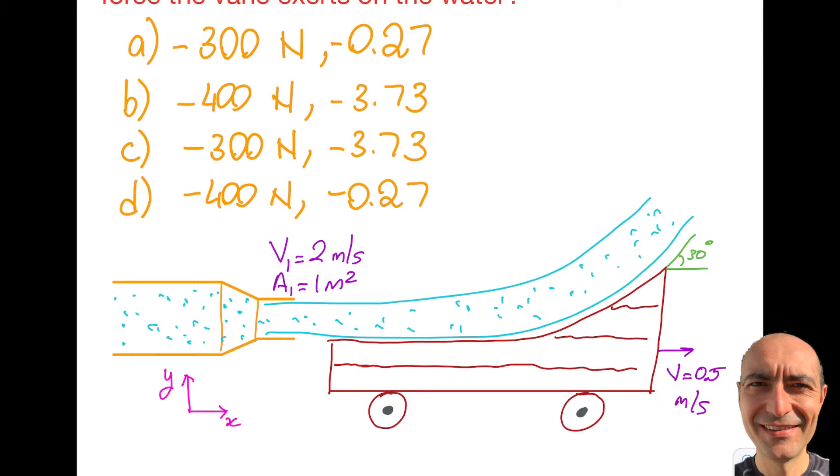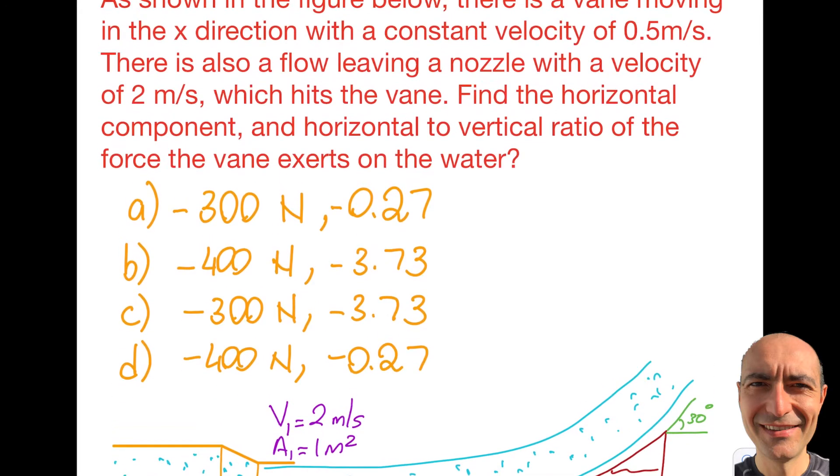I've given you the angle as well. There's a nozzle here, and the flow is leaving this nozzle, hitting the vane, and being deflected as expected. I've marked X and Y directions. Let's go back to the question and read it.